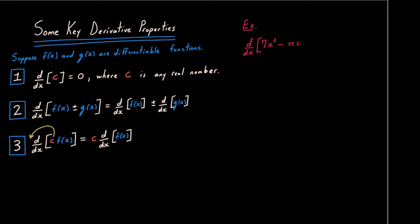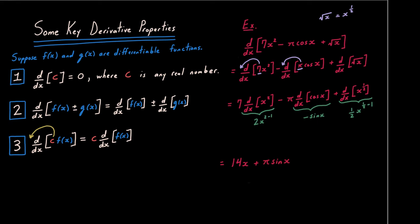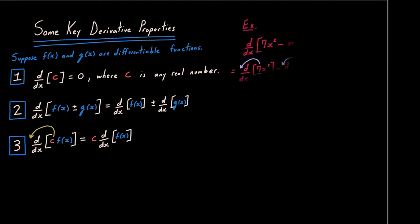Now let's use these properties in an example. We can break a sum into three derivatives using property two, then use property three to pull out constant factors like 7 or π. Note that √x = x^(1/2). Then apply the power rule to the first and third terms, and use our cosine derivative formula for the middle term.